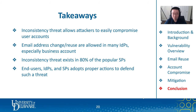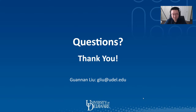A few takeaways from our work: we reveal that the identity account inconsistency threat exists and can be exploited to compromise user accounts. We show that the majority of identity providers allow users to change or reuse email addresses, and 80% of the popular service providers are vulnerable to such a threat. End users, IDPs, and SPs should all be aware of this threat and take proper precautions and defenses as needed. If you have further questions, feel free to contact me via email. Thank you for listening.